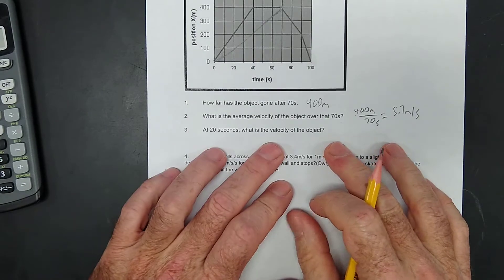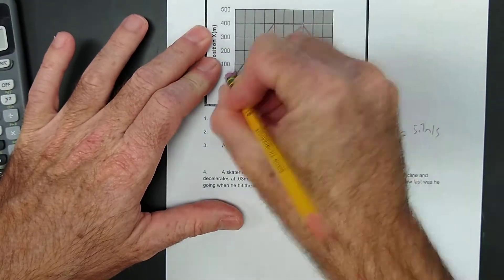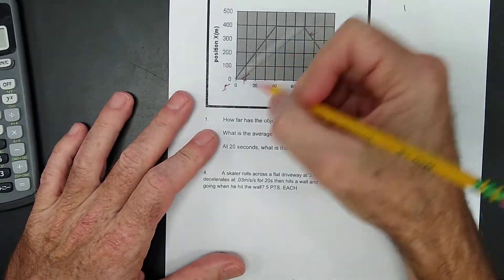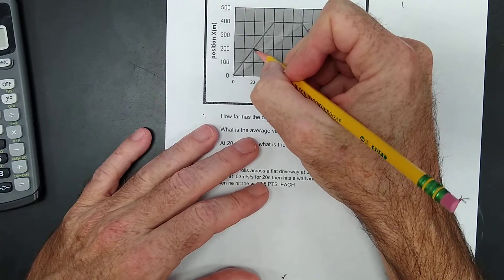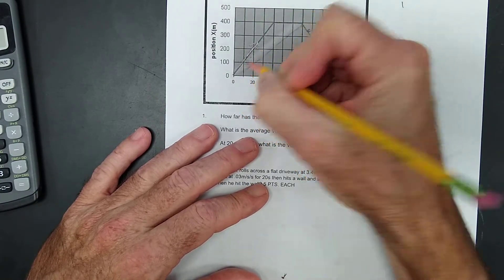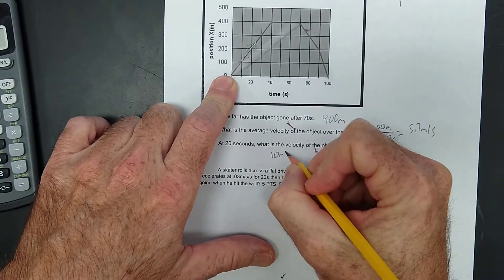At 20 seconds, what is the velocity? So now at 20 seconds, you can look and you can see we're right here, okay? So there's two ways to do this. One, you can say we've gone 200 meters in 20 seconds. So that'd be 10 meters per second.